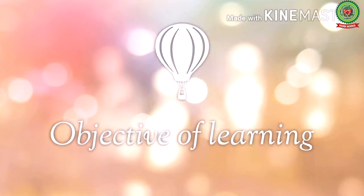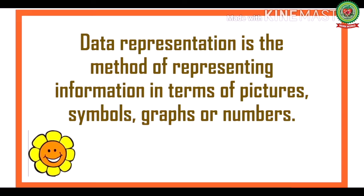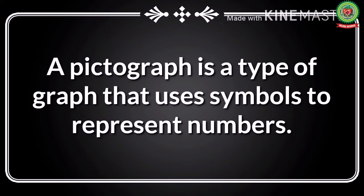The main objective of today's learning is to understand how to read and draw a pictograph. Data representation is the method of representing information in terms of pictures, symbols, graphs or numbers. The information that we collect is called data. There are different methods of data representation, and one of them is pictograph. A pictograph is a type of graph that uses symbols to represent numbers.